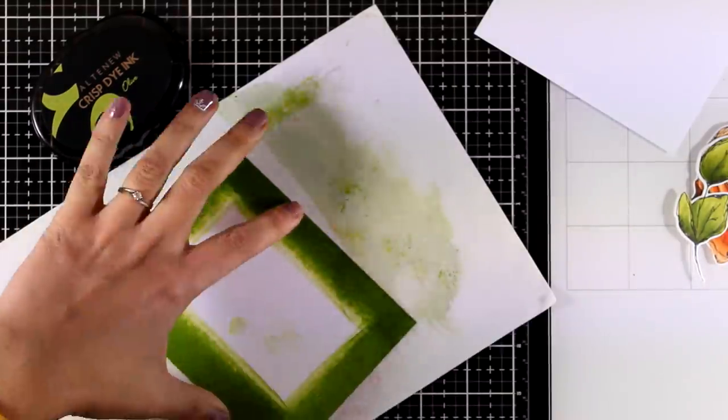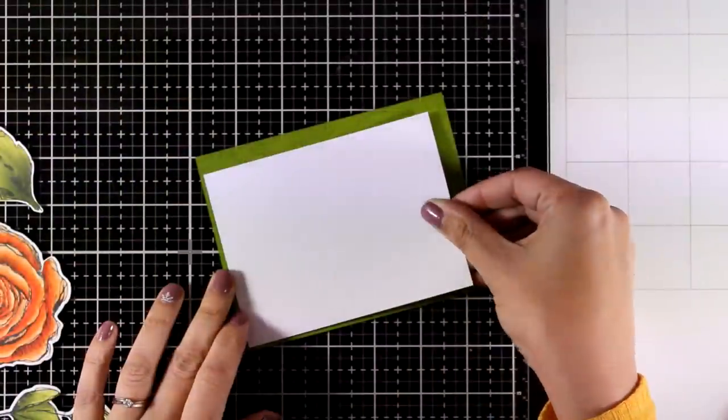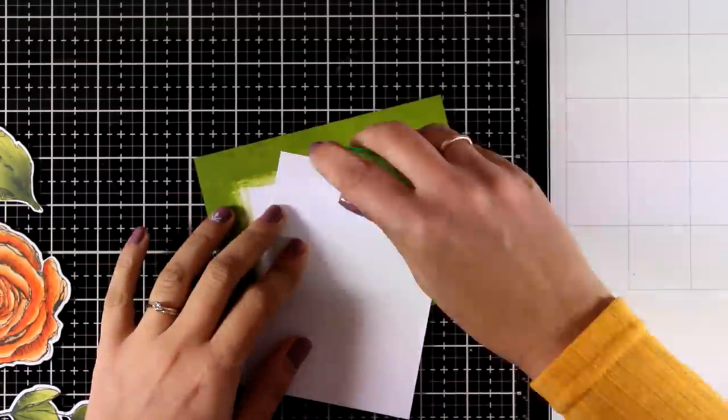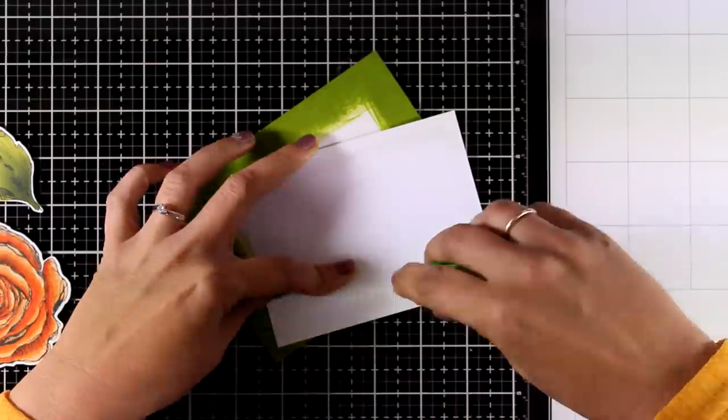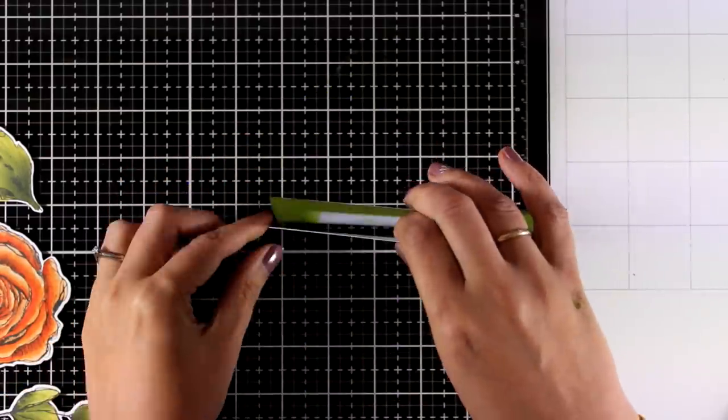Of course you can do this process with the actual marker but this is quicker and I don't spend a lot of ink from my marker. Now I can add the panel on top, I can place it at the center to have a lovely green border or I can slide it towards one side just to add some interest on my card.